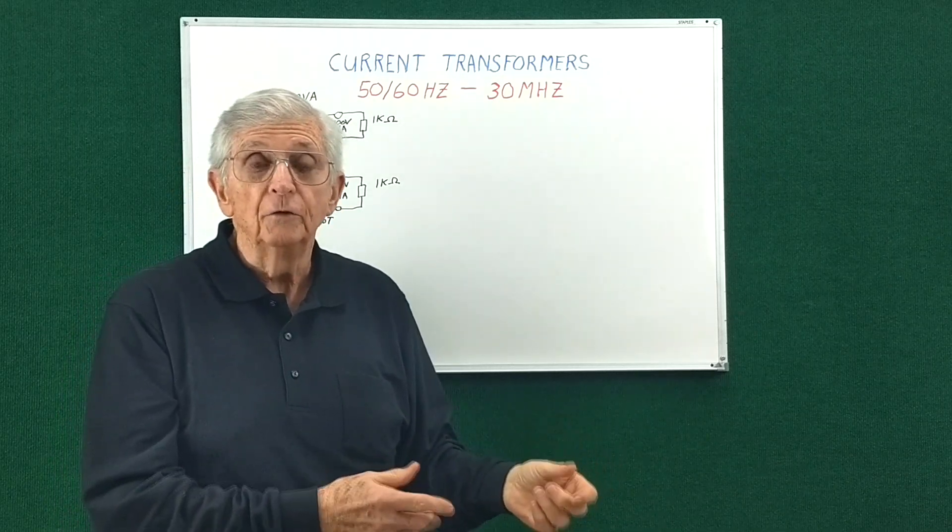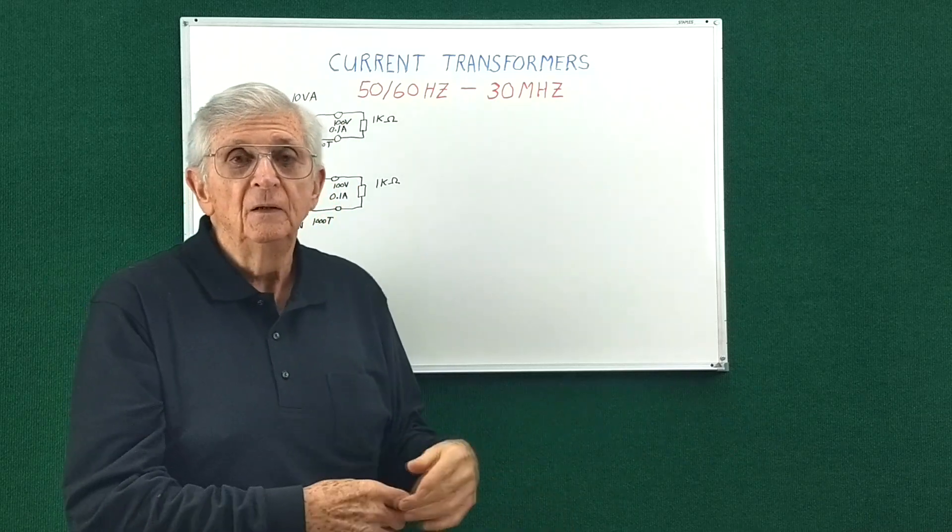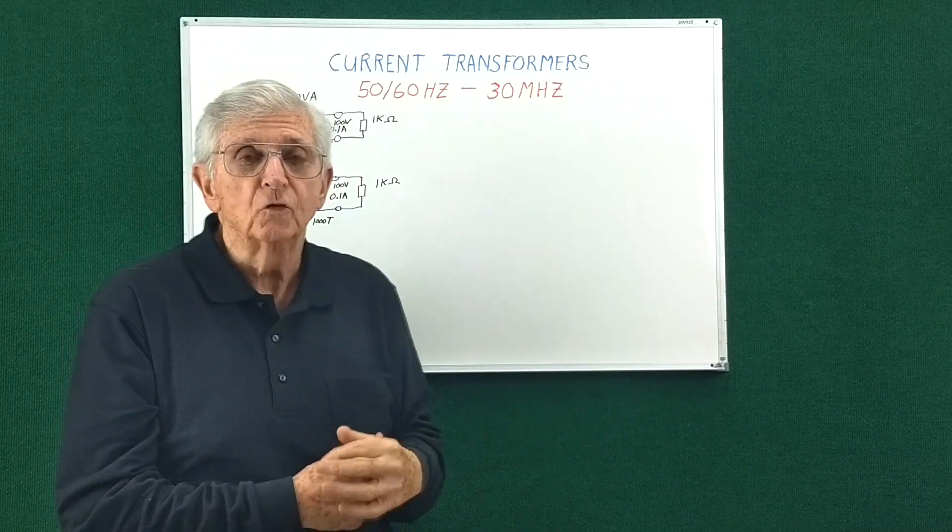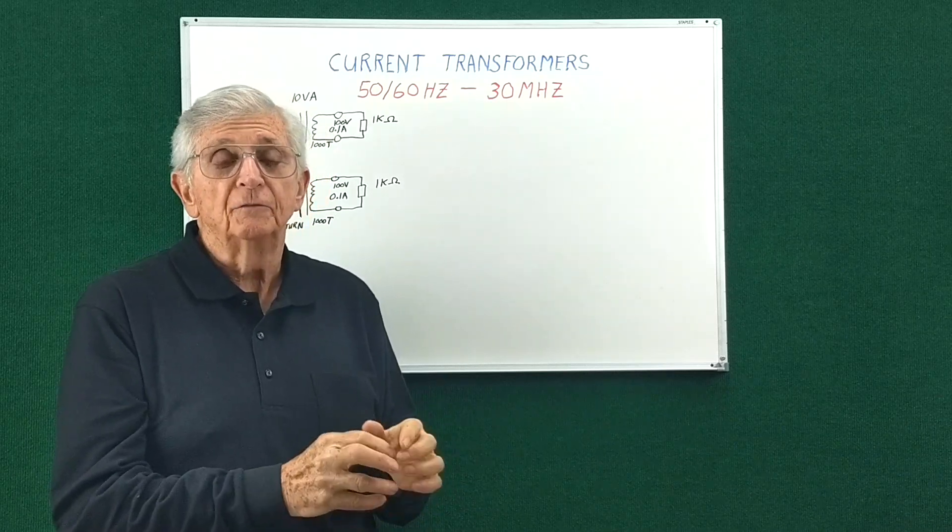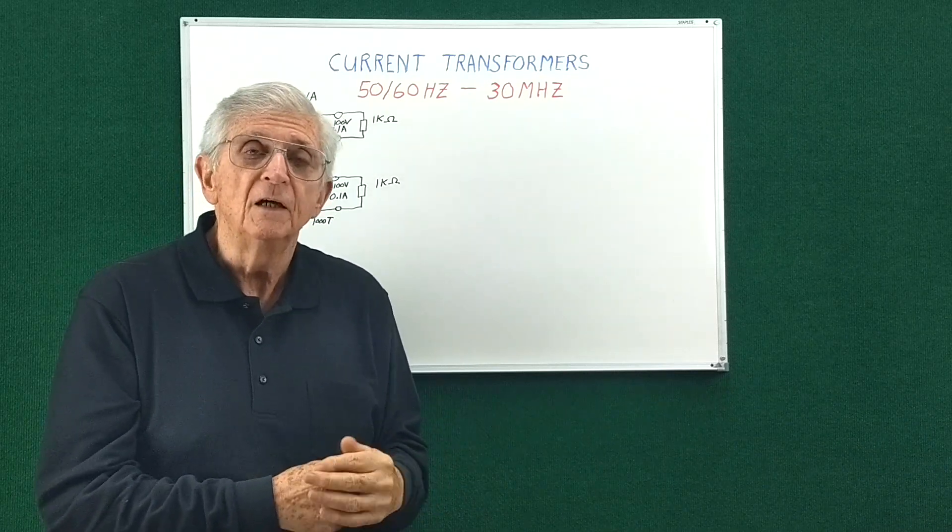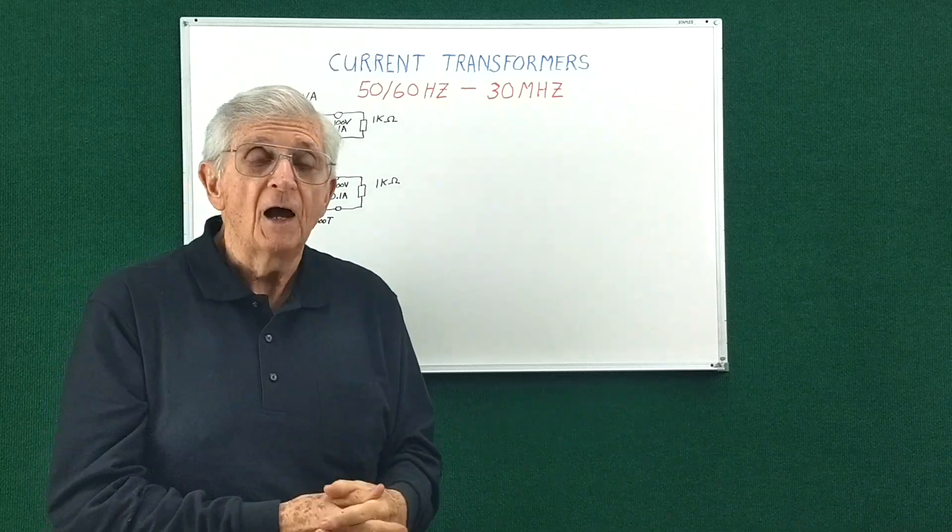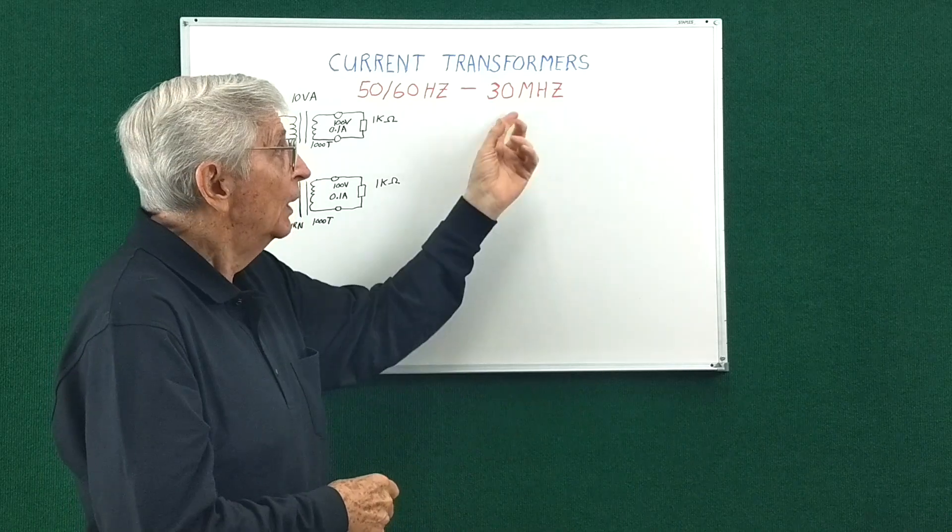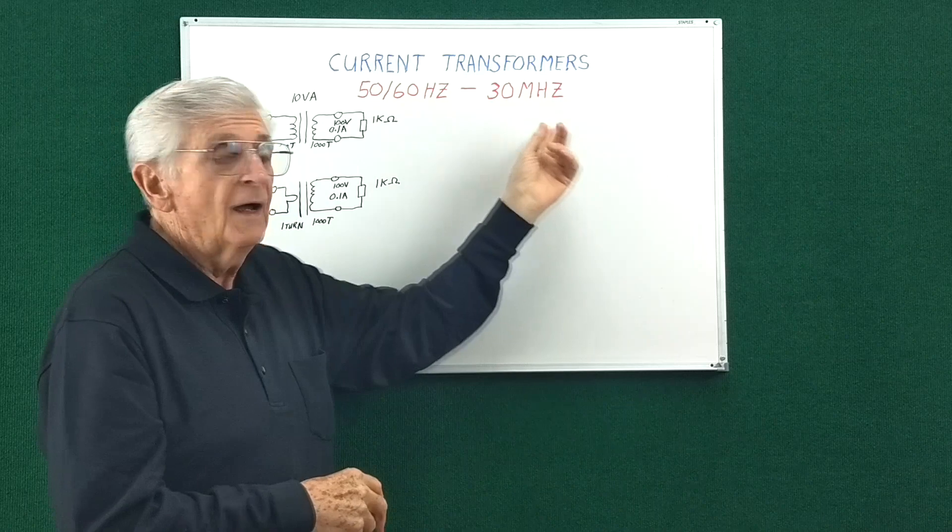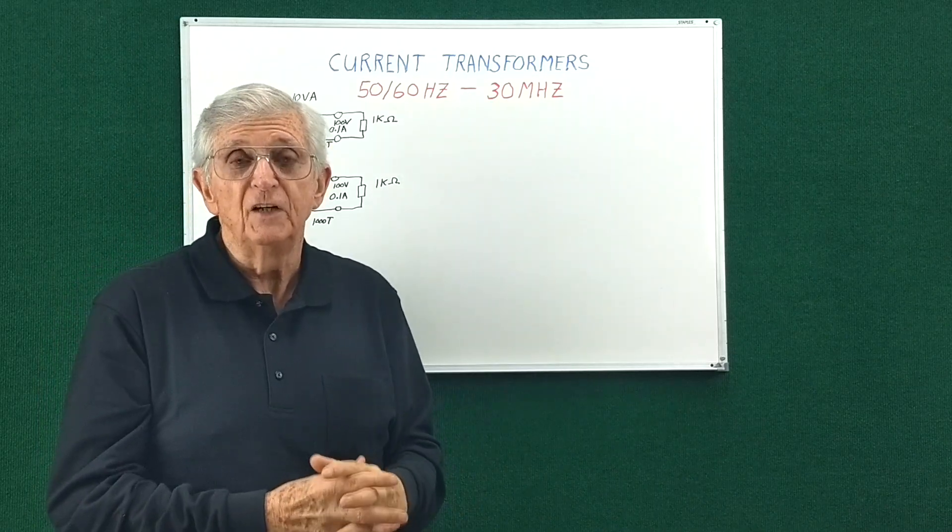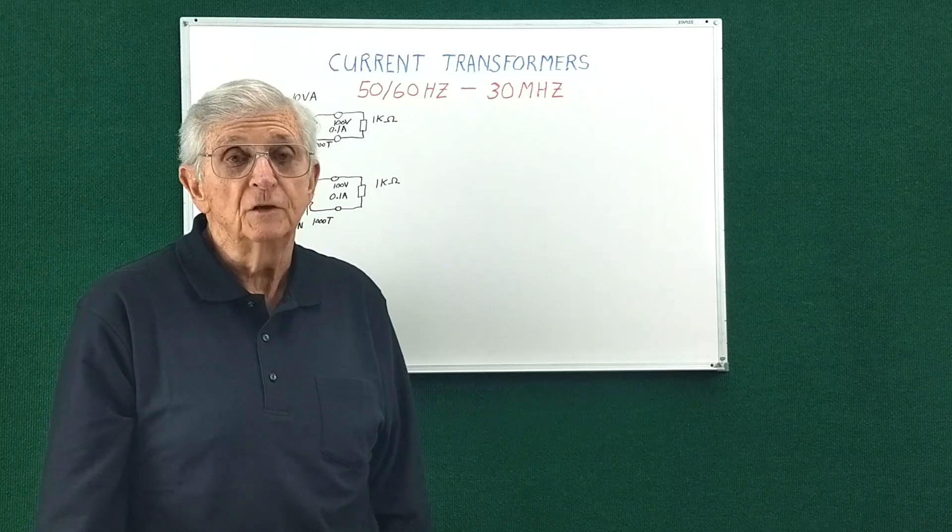Is that current uniform? Is it the same everywhere in the mag loop? Well, if you have a current transformer you can find out. Also, there's a lot of controversy as to whether you need a choke balun at the feed point of a dipole antenna. With a current transformer you can find out, and I'll be covering the high frequency stuff in another video, so be sure to subscribe so you don't miss those.